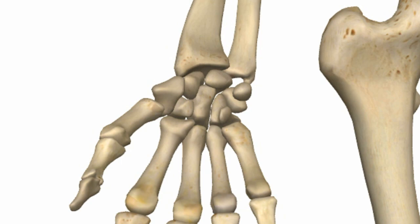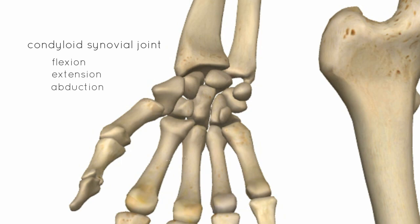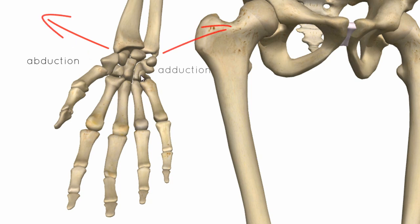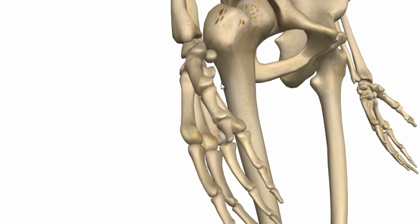The wrist joint is a condyloid synovial joint, so you get flexion, extension, abduction, adduction, and circumduction, which is a combination of all these movements. Abduction is movement in this direction, adduction is movement towards the midline, and flexion and extension — flexion is up this way and extension is back this way.